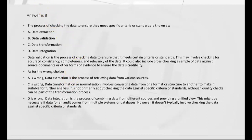A is wrong — extraction is the process of retrieving data from various sources. C is wrong — transformation or normalization involves converting data from one format or structure to another. D is wrong — integration is the process of combining data from different sources and providing a unified view. Integration doesn't typically involve checking the data against specific criteria or standards. That would be validation.